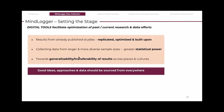From the researcher's point of view, results from already published studies can be replicated, optimized, and built upon, collecting data from larger and more diverse sample sizes towards generalizability or the transferability of results across places and cultures. Good ideas, approaches, and data should be sourced from everywhere, including Southeast Asia, Africa, and Latin America, if we are to progress in mental health.